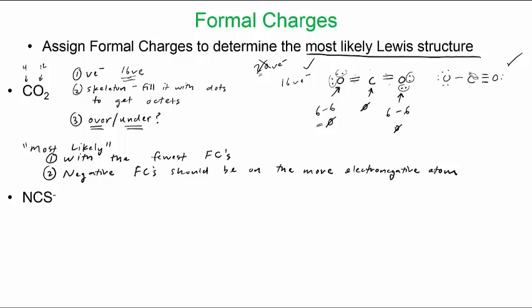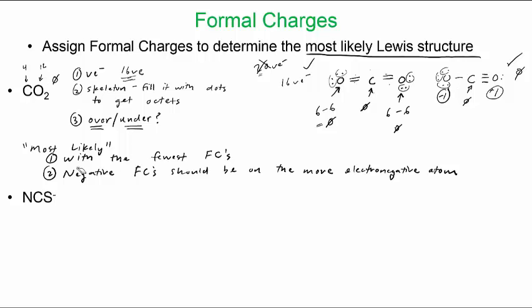On the asymmetric structure with a triple bond, this oxygen has six minus six lone pair electrons minus one bond equals minus one. The other oxygen has six minus two minus three bonds equals plus one. Carbon is four minus four equals zero. These add up to a net charge of zero, which is correct, but we have nonzero formal charges present.